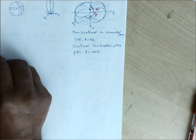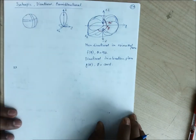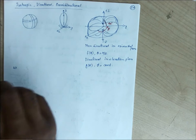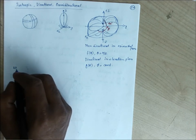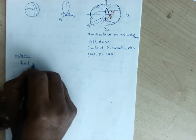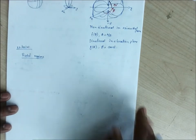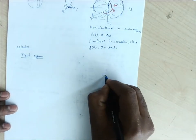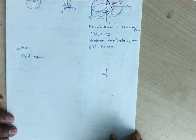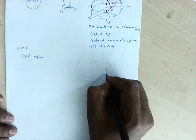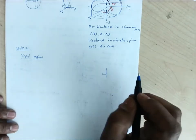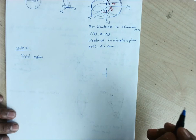Today's topic is the different kinds of fields that can exist for an antenna when it is radiating. We will segregate the field regions depending upon the distance from the antenna center. So we can able to segregate these field regions for different distances from the antenna.